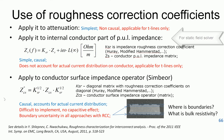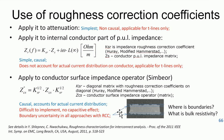Yet another approach is to apply the roughness correction coefficient directly to the conductor surface impedance operator. This approach is used in Symbiore software, and it is shown here how it is done. It is physical — it accounts for current redistribution. One problem with this approach is that we cannot really draw a straight boundary of the conductor, which has an effect on both the bulk resistivity and the capacitance of the conductor.